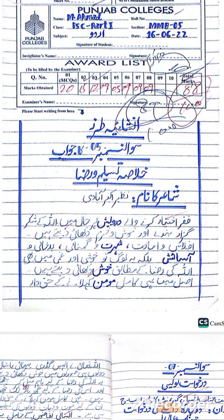Dear students, to cover all these points I will share a solved FSC Part 1 paper with you. We will discuss it, and if you watch this video till the end you will understand how to attempt the final exam paper. Let's get started. First, regarding objective type: your Urdu compulsory paper is 100 marks total — 20 marks are MCQs, and the remaining 80 marks are subjective. To cover the 20 marks MCQs, watch the dedicated MCQs video.